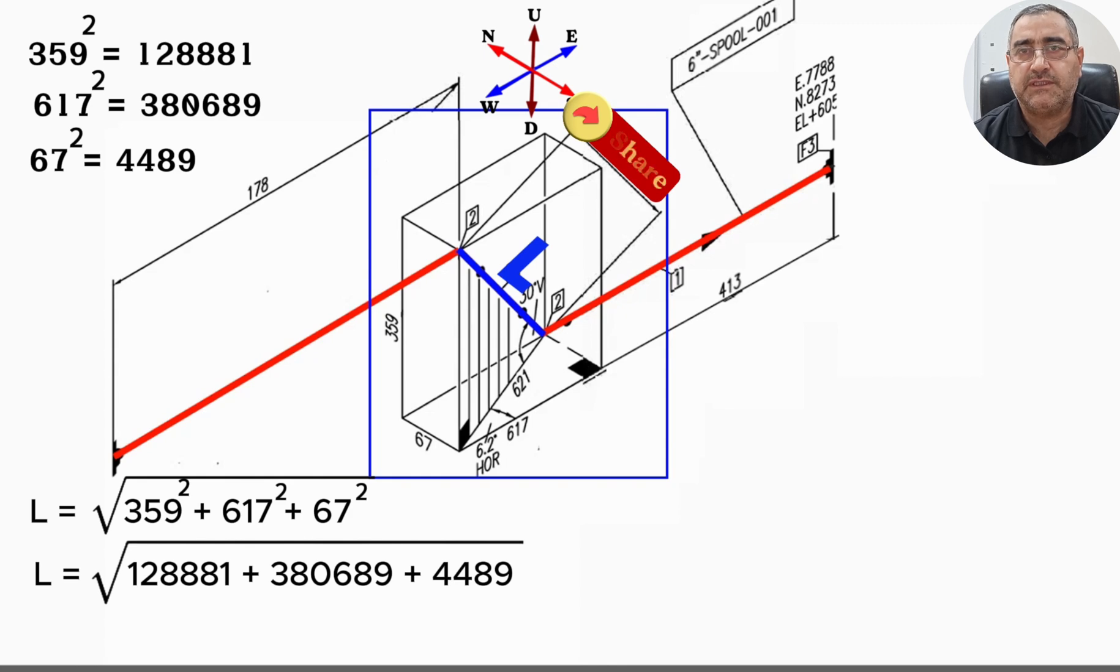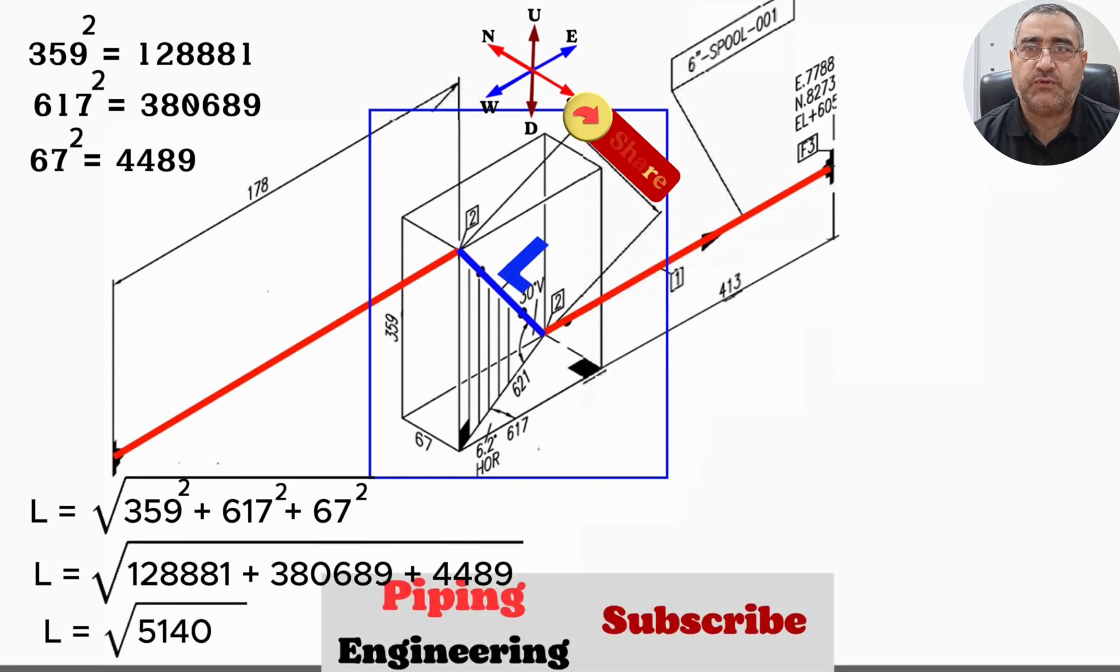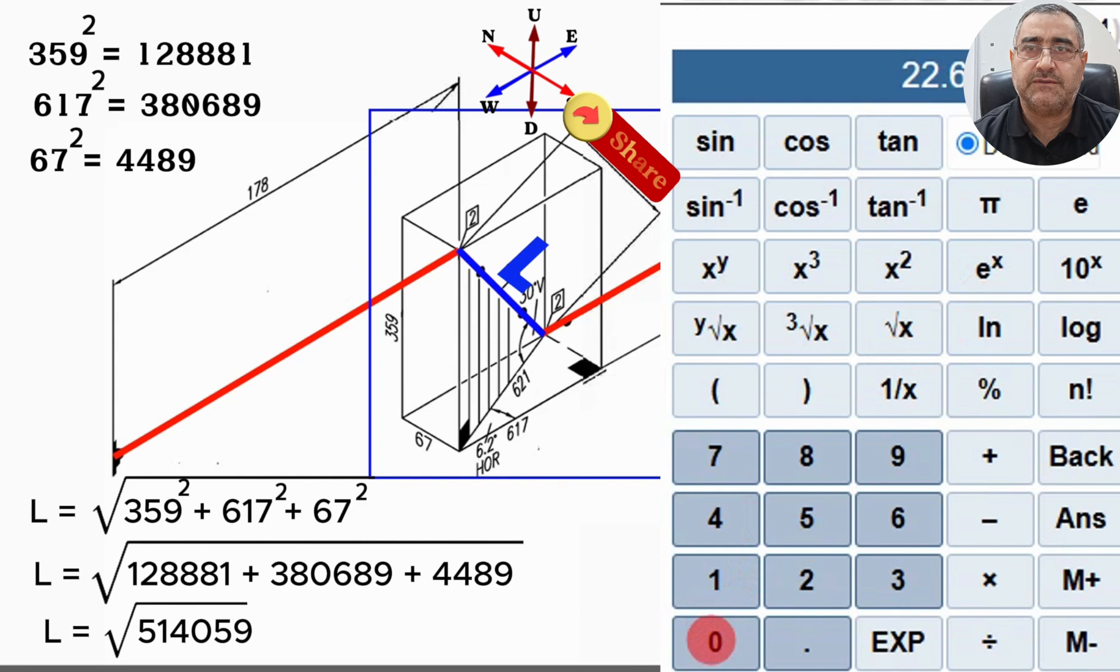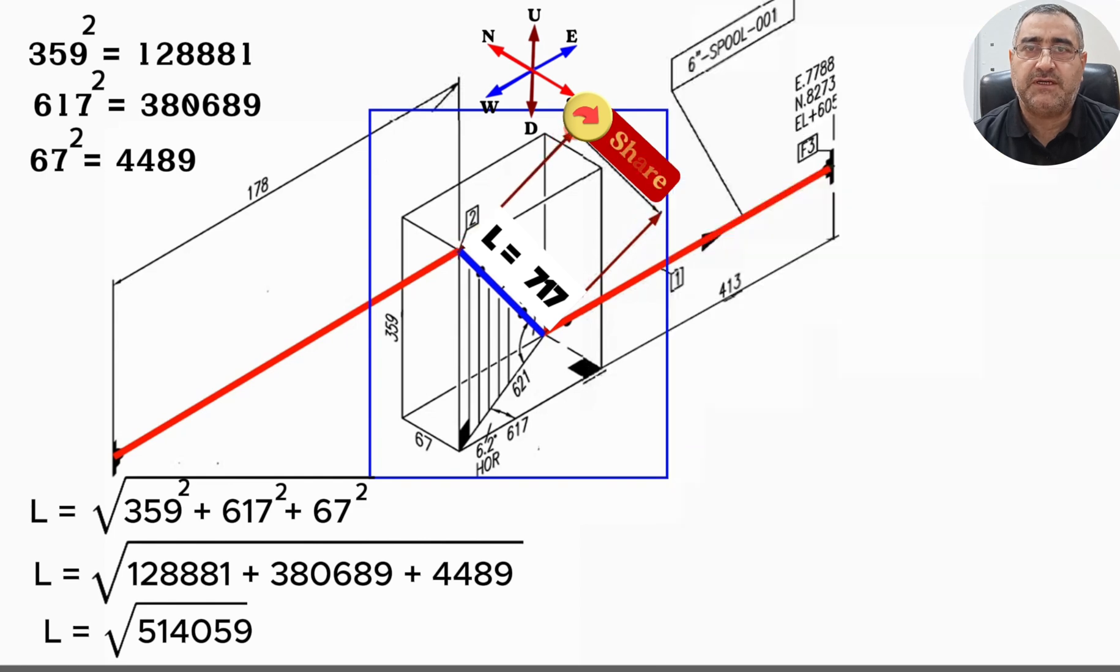So in our formula, pipe section travel length L will equal the square root of 514,059. At last, again using the calculator, we find that the square root of 514,059 equals approximately 717. Thus, the length of this pipe section as depicted in the piping isometric drawing is correct.